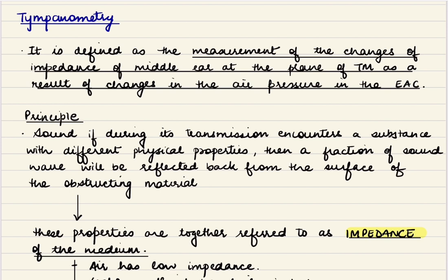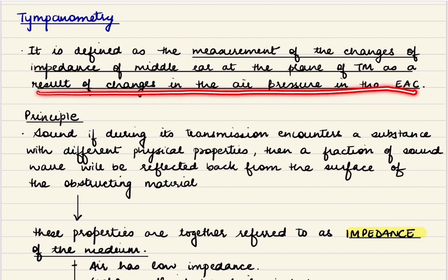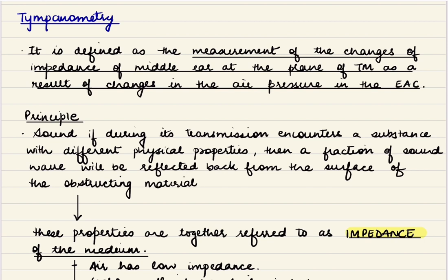This occurs as a result of changes in the pressure in the external auditory canal. Basically, what we do is change the pressure in the external auditory canal and measure the changes of impedance of the middle ear in relation to these changes.